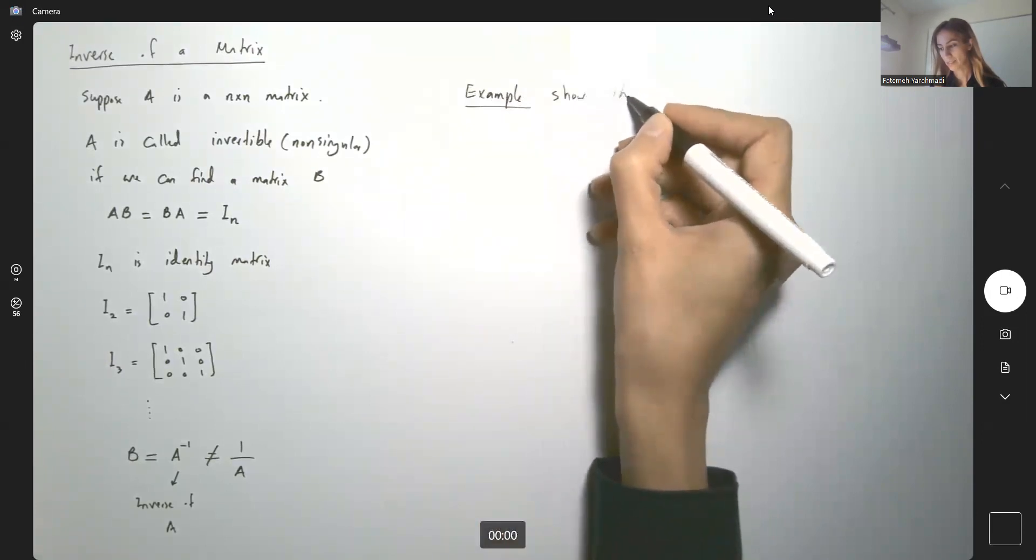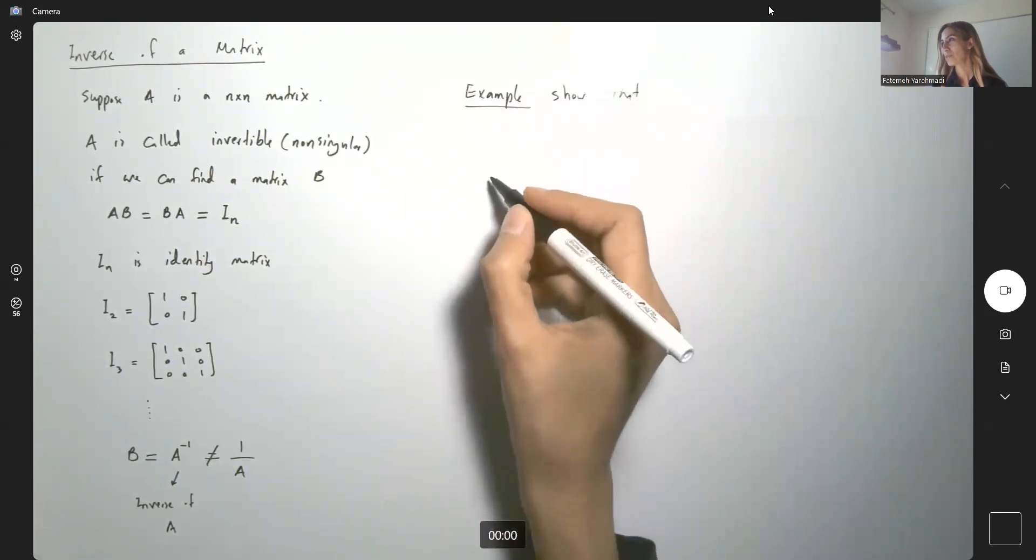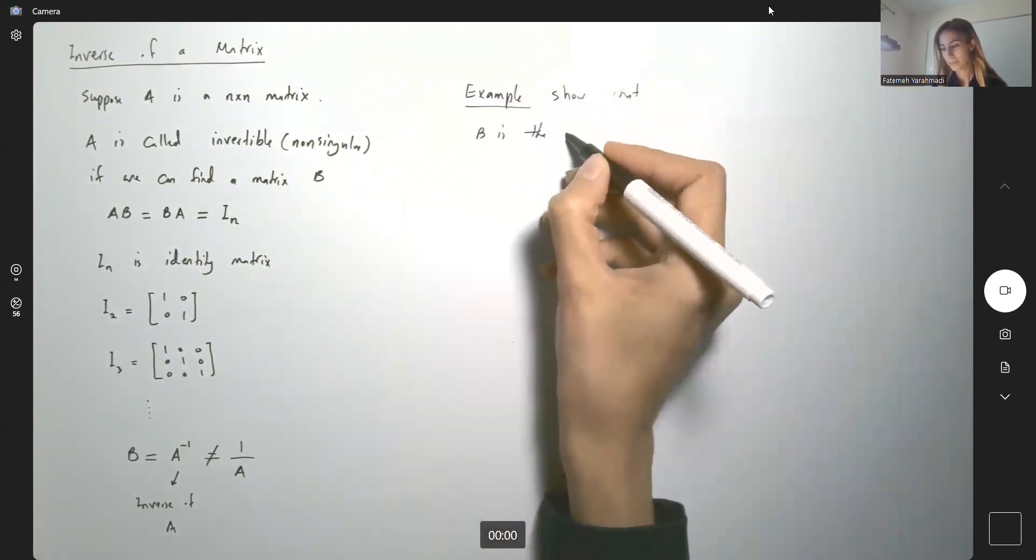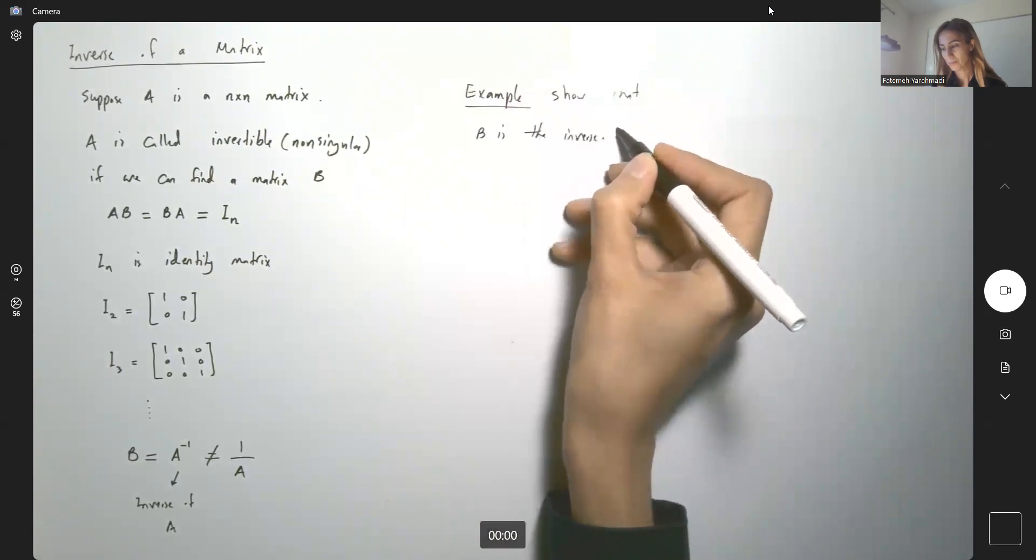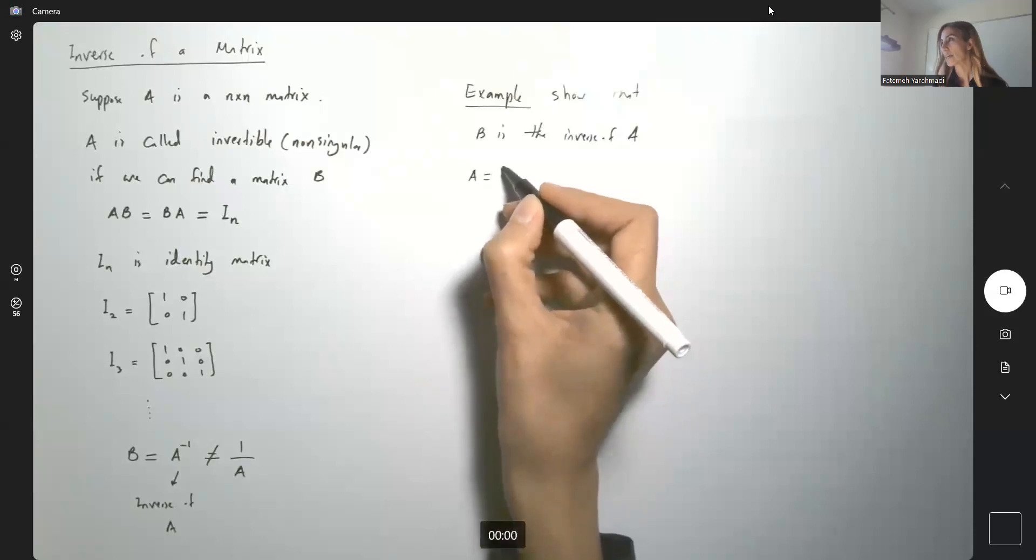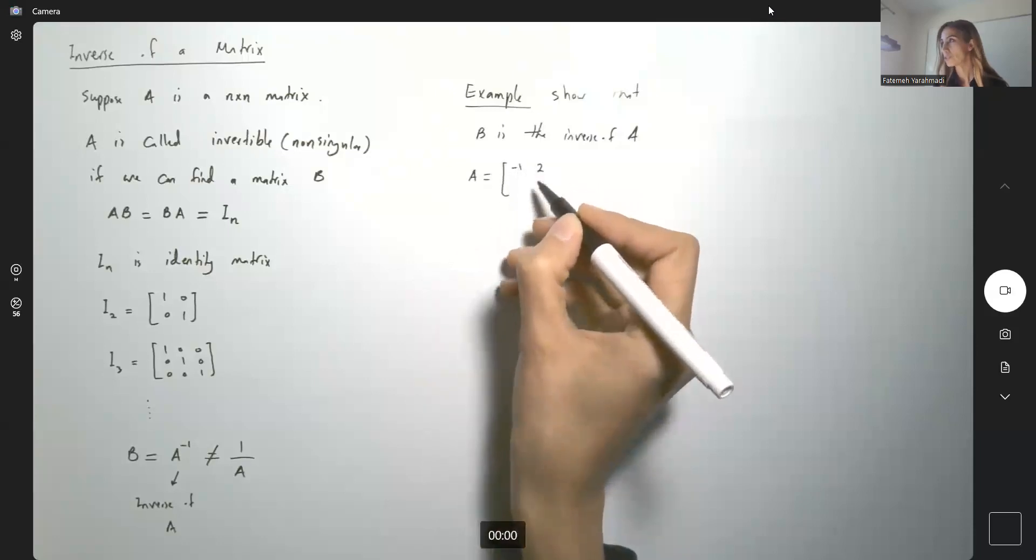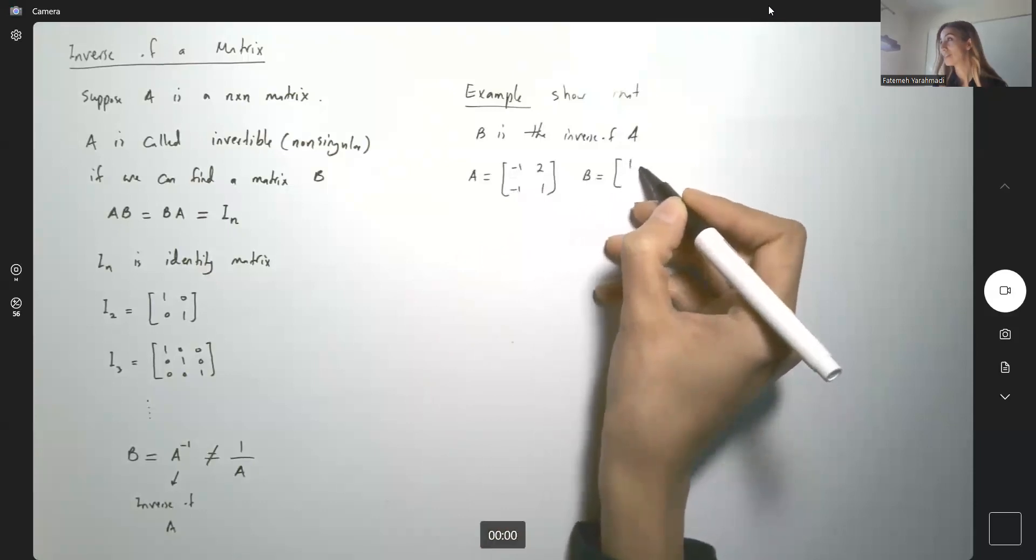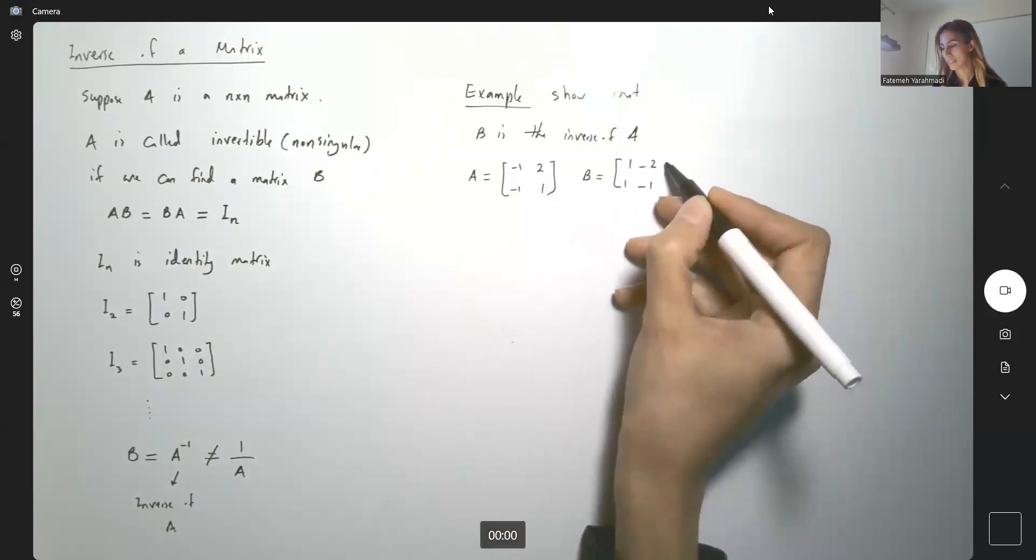Show that B is the inverse of A. Following the note, A is given to us as negative 1, 2, negative 1 and 1. And B is given to us as 1, negative 2, 1 and negative 1.